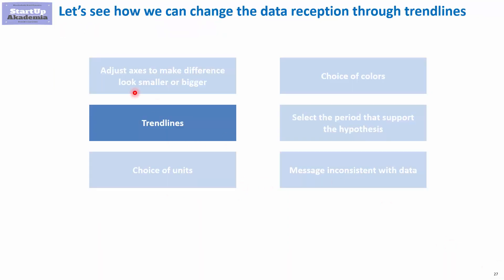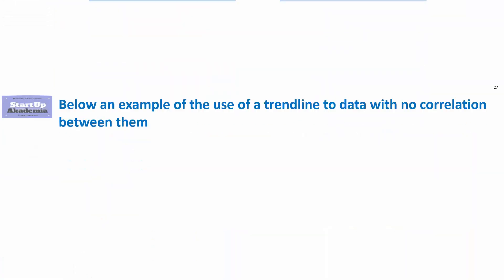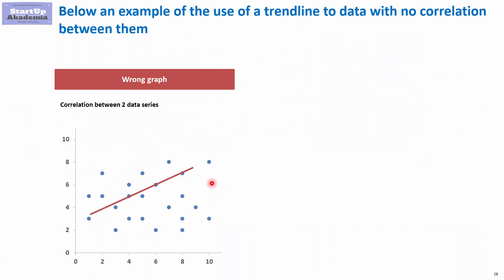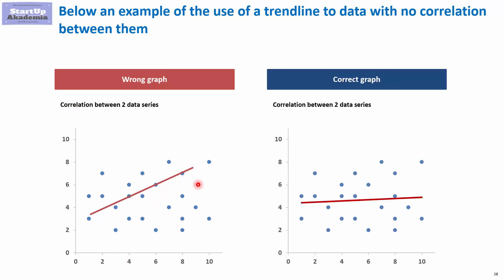Now let's have a look at the example of trend lines. Here we have a certain number of data points gathered by a consultant, and he has put a trend line in a way that would suggest there is a big correlation between what we've got on the y-axis and what we've got on the x-axis. However, the reality is that there is actually no relation between them. So as you can see, we've got the same data, but simply by putting the line in a certain manner, you can influence the perception of the data.